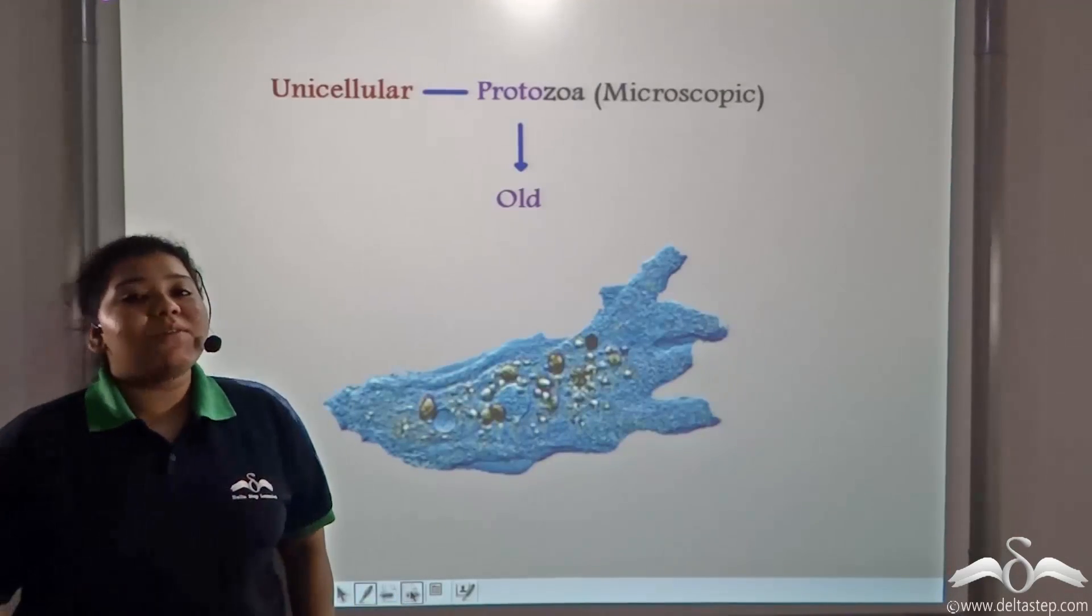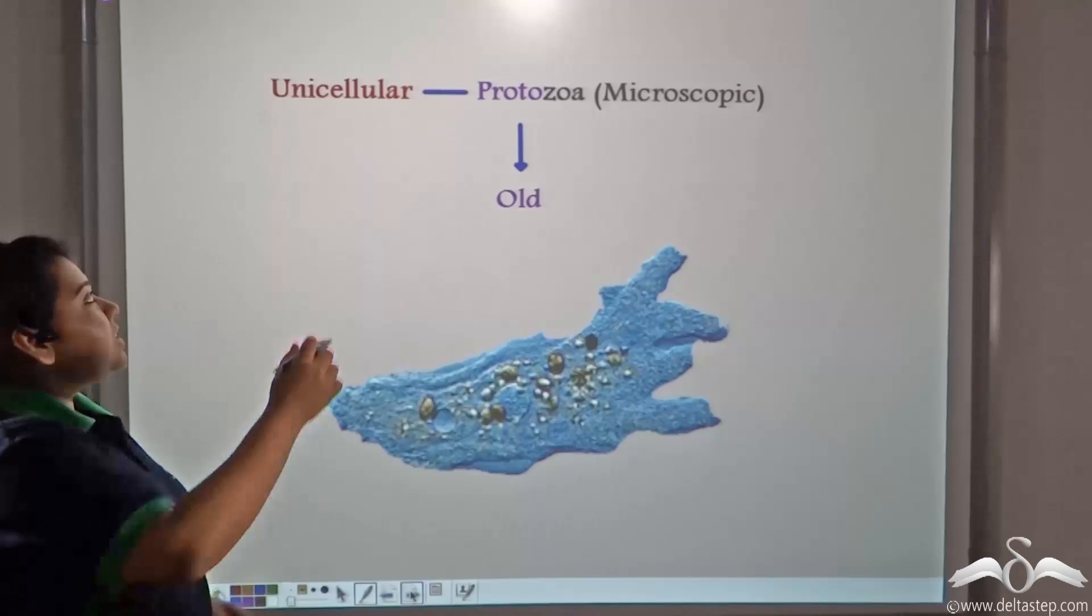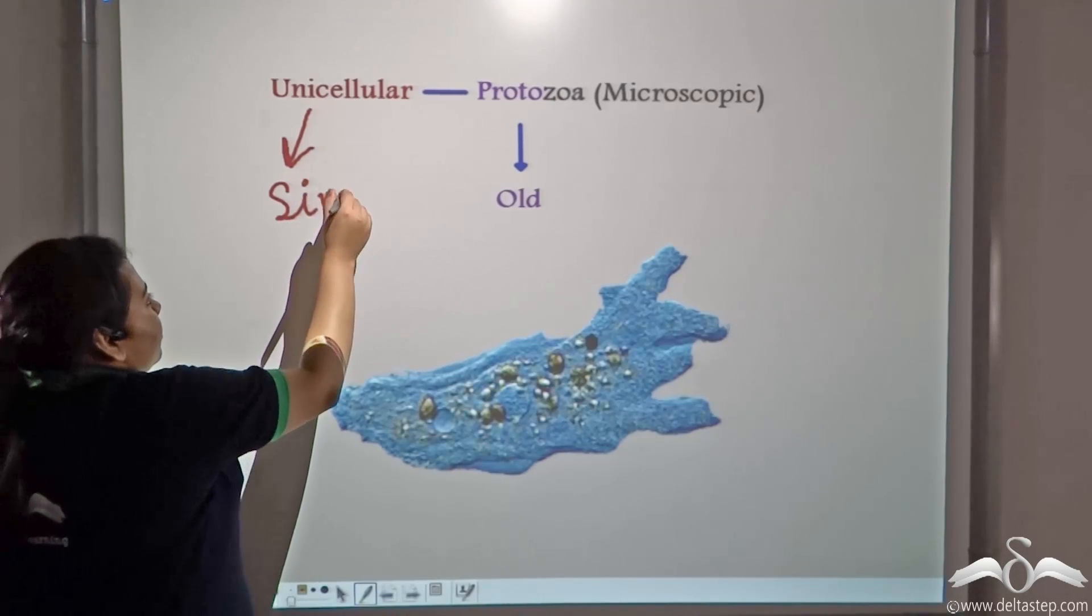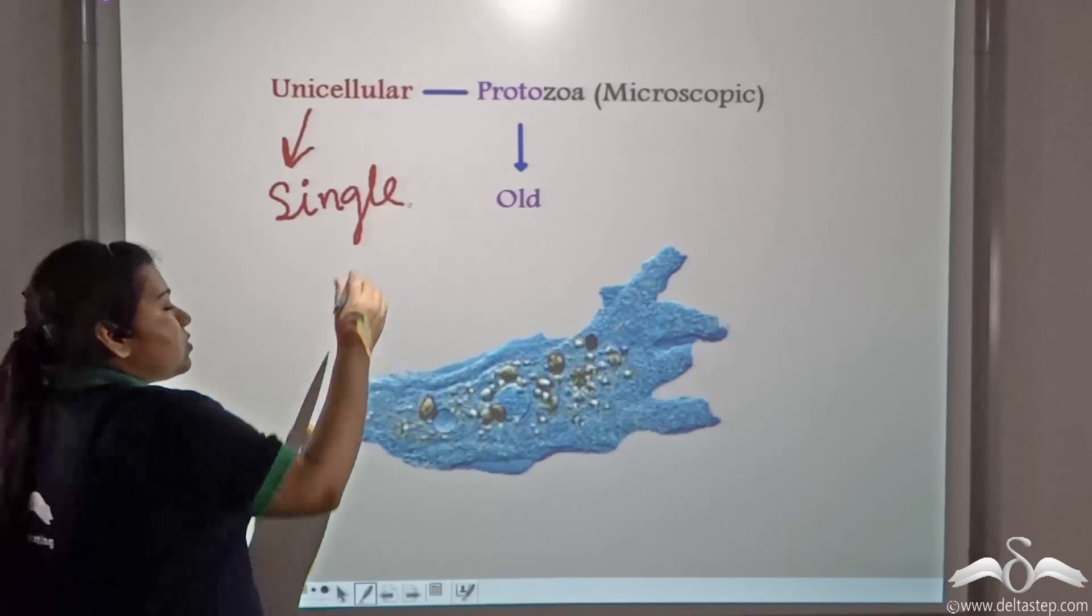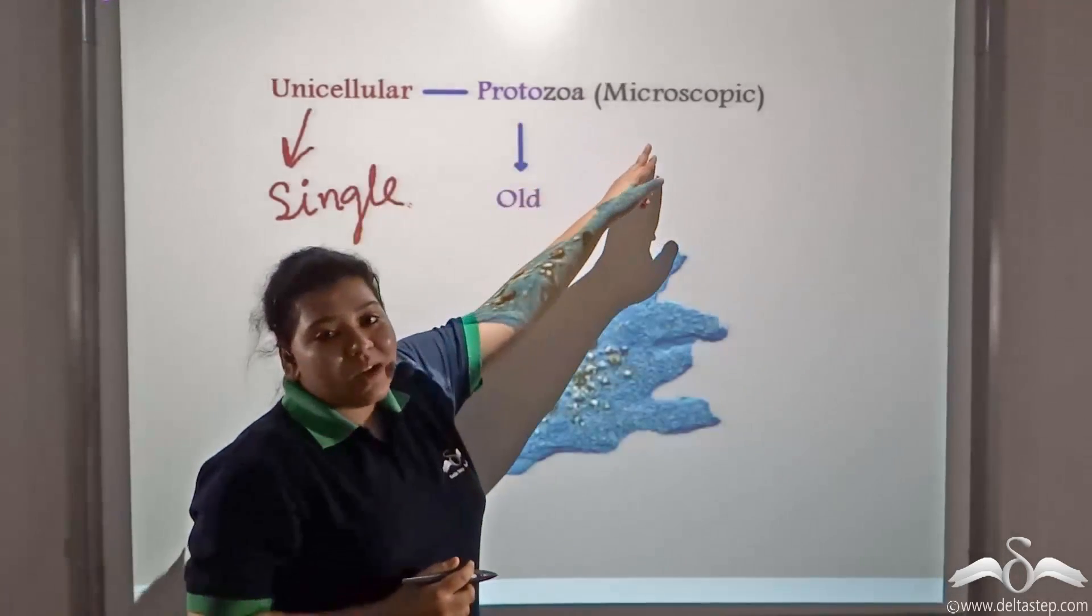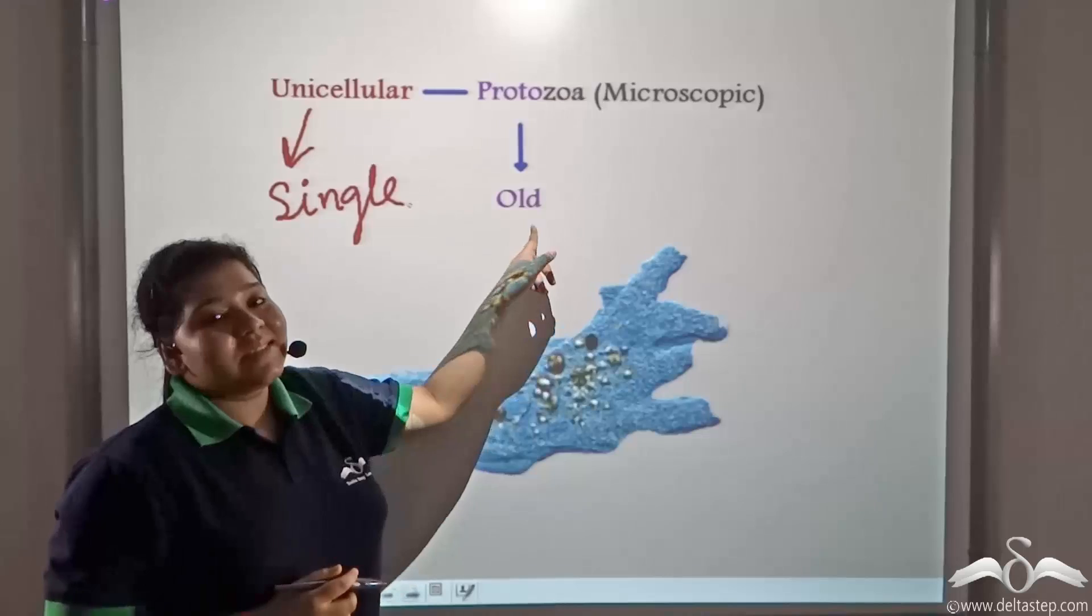These unicellular organisms or single-celled organisms are microscopic and they are known as protozoa, where proto means old.